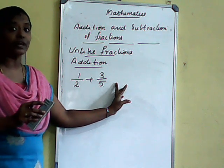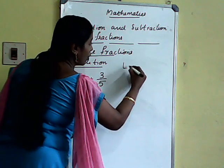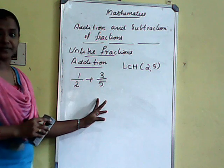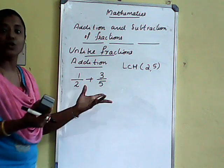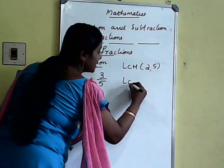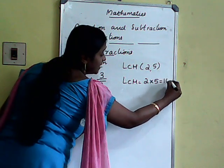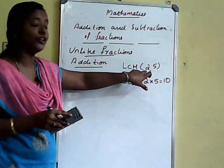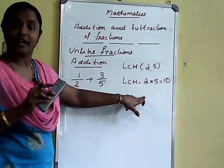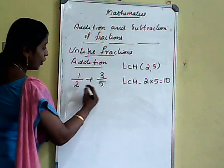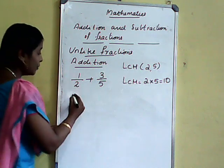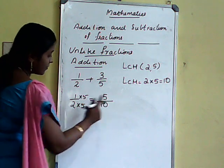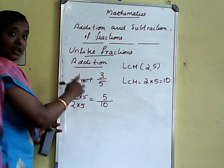To change to like fractions, we find the LCM. LCM of 2 and 5: here 2 and 5 are co-primes — no number is common between 2 and 5 — so their LCM is their product: 2 into 5, that is 10. We want to change the denominators 2 and 5 to 10. So 1 by 2 becomes 1 by 2 multiplied by 5 over 5, giving 5 by 10. Whatever number you multiply in the denominator, you must also multiply in the numerator.